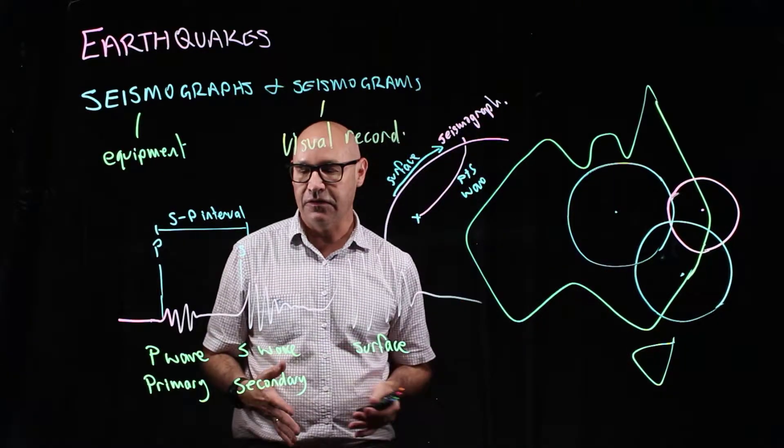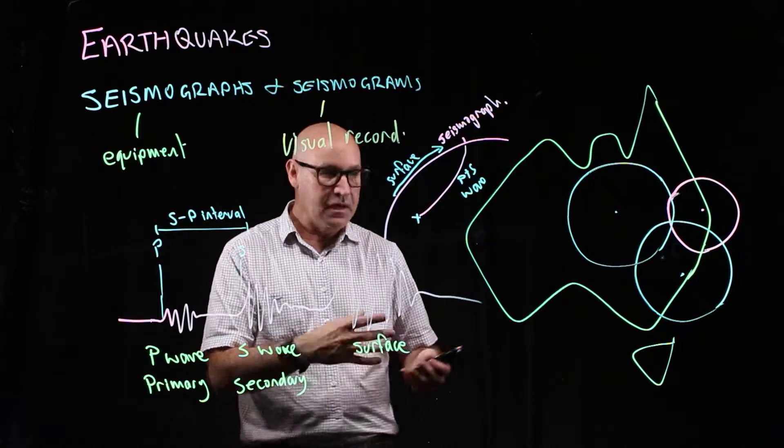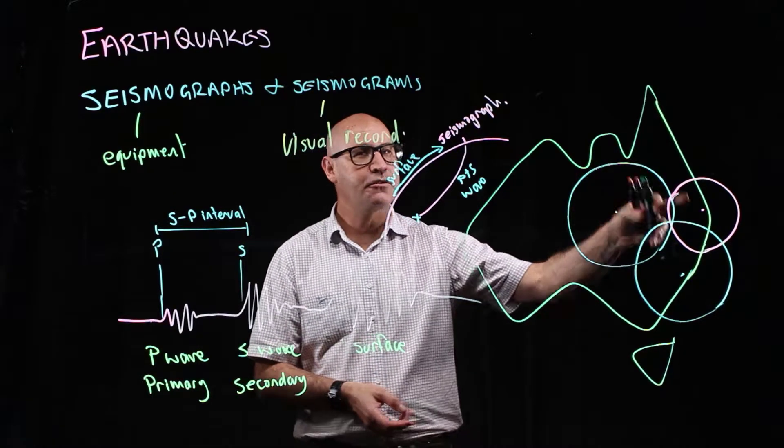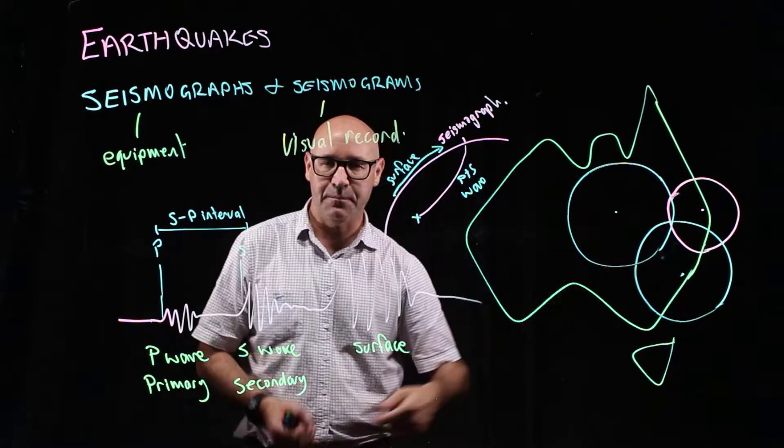So that's how you work out the epicenter. You need to work out the S-P interval, convert that to distance, and then have information from three seismograms. And where they triangulate, that's the epicenter.